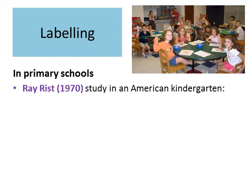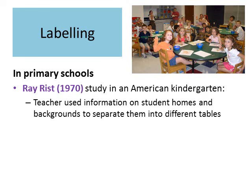In primary schools, Ray Rist looked at an American kindergarten — what in the UK we would refer to as a reception year. Teachers used information on student homes and backgrounds to separate them into different tables. Rist found that teachers were looking at pupils' personal files, finding out where they lived, discerning whether that was a working class or middle class area, and then seating the children at different tables based on that information.